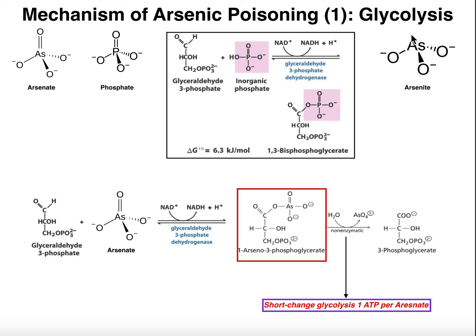Arsenite is a more reduced form of arsenic, but it still has three negative charges. It turns out that arsenite is going to be the deadly one in the TCA cycle, whereas arsenate is going to be the one that disrupts glycolysis.